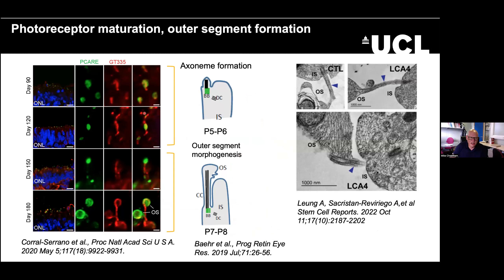Looking more closely at how the outer segment forms, it starts around day 90 and then elongates over the next 100 days. This is very similar to what you see in the developing mouse retina — they seem to get stuck around a relatively immature stage and never quite reach full maturation. This might be due to lack of trophic factors or the lack of overlying RPE. But sometimes you can get relatively well-organized discs within these rudimentary outer segments, and you can see the connecting cilium and the basal body.